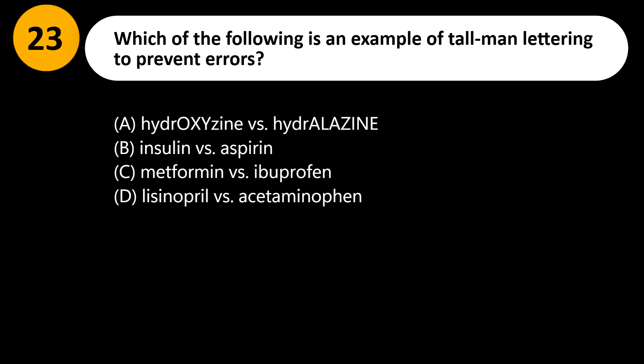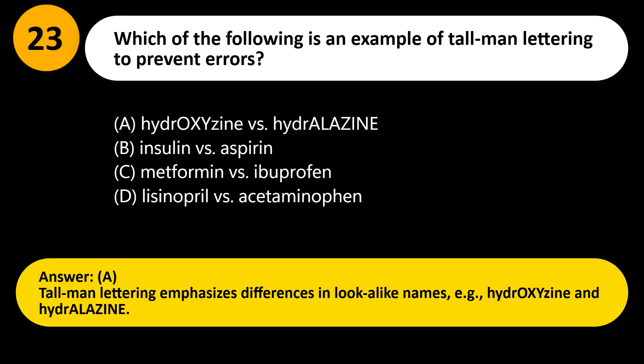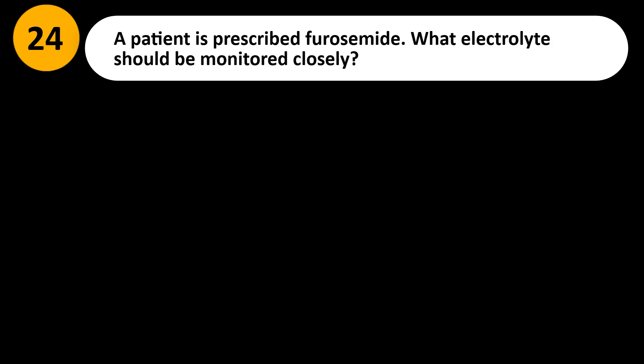Which of the following is an example of tall man lettering to prevent errors? A) Hydroxyzine versus hydralazine, B) Insulin versus aspirin, C) Metformin versus ibuprofen, D) Lisinopril versus acetaminophen. Answer: A. Tall man lettering emphasizes differences in look-alike names, e.g., hydrOXYzine and hydrALAzine.